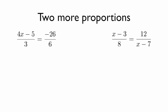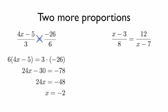Take a minute and jot down these two proportion examples. Pause the video, try them on your own. Did you pause the video? Good. With the first one, the cross product gives us 6 times the quantity 4x minus 5 equals 3 times negative 26, and solving gives us that x equals negative 2.